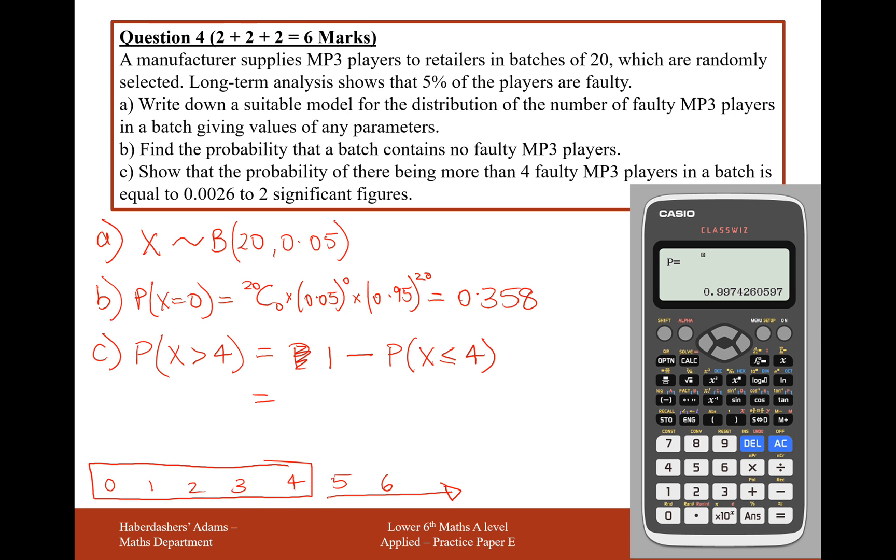What we want is for 4 and downwards out of 20 of the MP3 players with a probability of 0.05 for each of those MP3 players, and it's going to be 1 minus 0.997426, which will give us 0.0026 when we round to two significant figures.